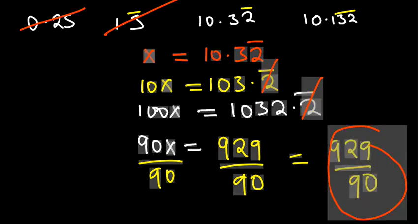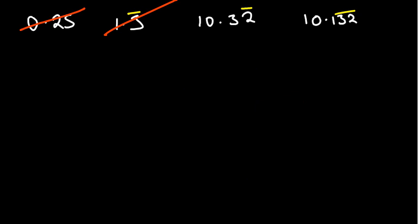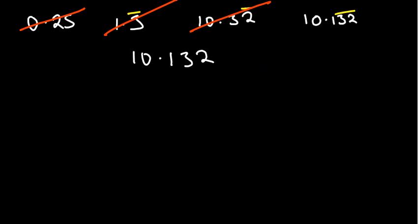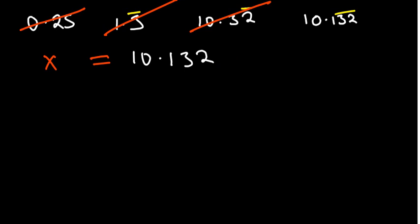Now that you understand the method, try pausing the video and solving the last one before I do. We have 10.132 recurring, where the bar is on 3 and 2 only — so 3 and 2 are recurring. I'll write it out as 10.1323232... so it's clear. We begin by forming an equation: x = 10.132 recurring.